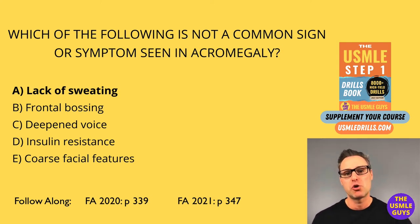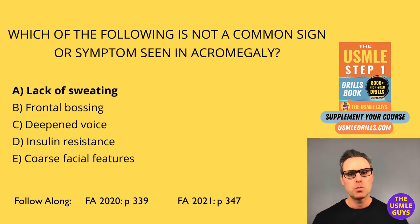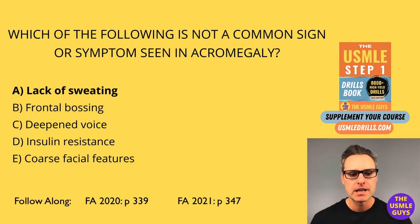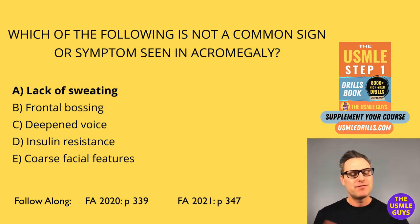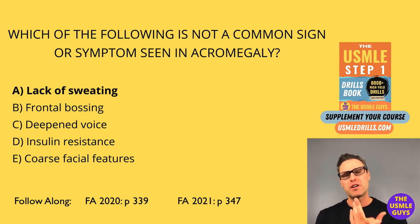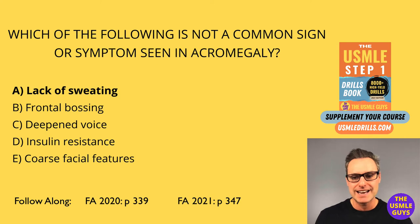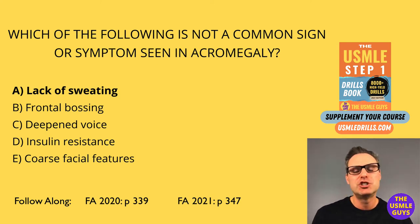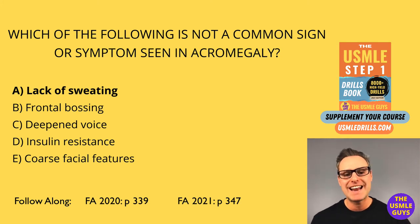With imaging, we're going to see a pituitary adenoma — some sort of lesion will be in that gland. Treatment requires removal of the mass if present. If that doesn't fix the problem, we intervene medically with one of three drugs: octreotide, a somatostatin analog; pegvisomant, a GH receptor antagonist; or a dopamine agonist such as cabergoline.